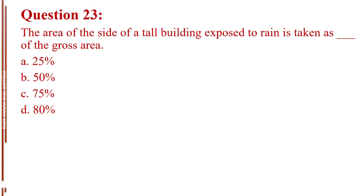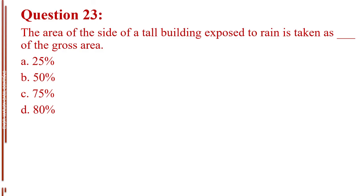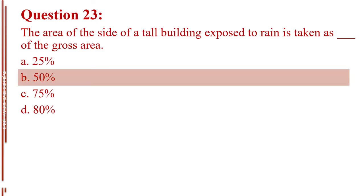Question number 23. The area of the side of a tall building exposed to rain is taken as blank of the gross area. Letter A, 25%. Letter B, 50%. Letter C, 75%. Letter D, 80%. The answer is Letter B, 50%.